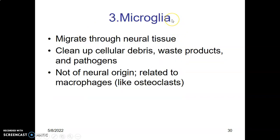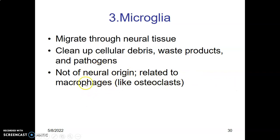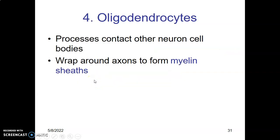Microglial cells are members of the monocytic phagocytic system, originating from the mesenchyme. They migrate through neural tissue and their main role is immune function — cleaning up cellular debris, waste products, and pathogens through phagocytosis. Remember they are not neural in origin and not ectodermal in origin; they are from the mesenchyme, just like osteoclasts.